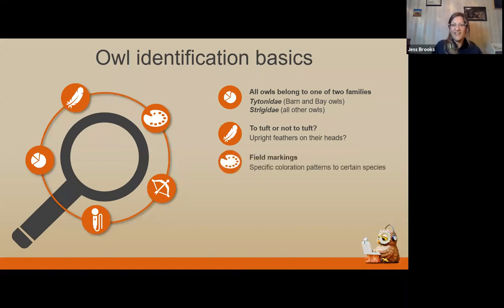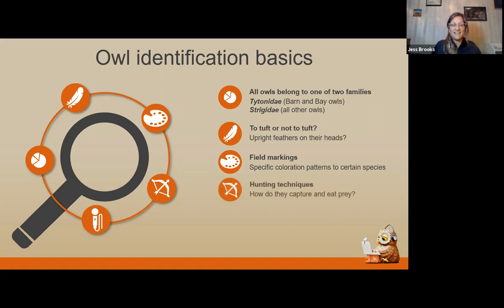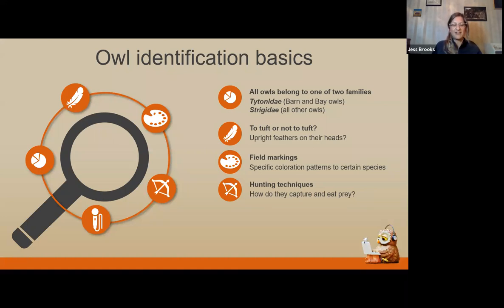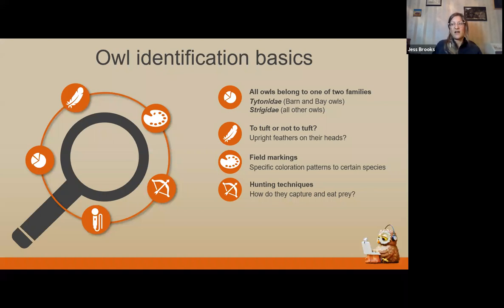We'll also be talking about field markings — one of the number one things we can look at when identifying an owl. We're going to look at plumage patterns, specific markings, eye and bill color, and things like that. We'll also look at hunting techniques and sometimes nesting techniques. If you're a birder or a beginner birder, these are the things we look for when out looking for owls: behaviors we keep an eye out for. Sometimes we'll see an owl perching, sometimes leaving or entering a nest, and sometimes hunting.